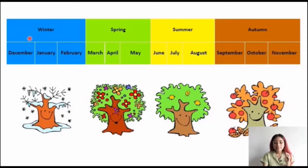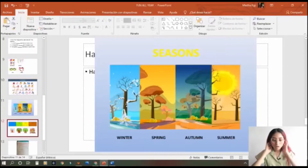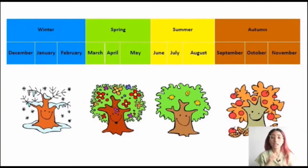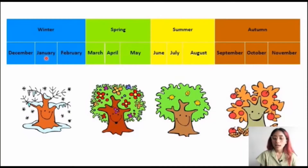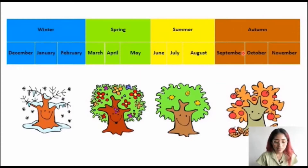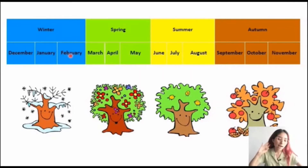Winter is in December, January, and February — three months. Each season takes three months. Spring is in March, April, and May — we can see animals, flowers, and plants everywhere. In summer we have June, July, and August. Autumn is September, October, and November.